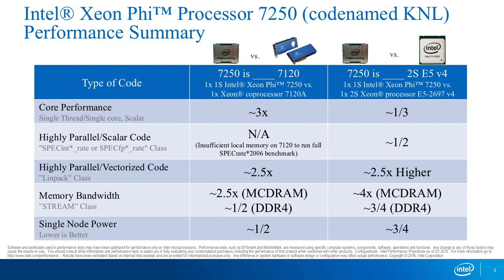Compared to Broadwell, KNL has close to one-third of single-thread performance. If you have something that is really single-threaded, Xeon will still be the better choice. I'm not trying to sell KNL as the holy grail of processing. There are still performance gaps if you have large single-threaded portions in your code.